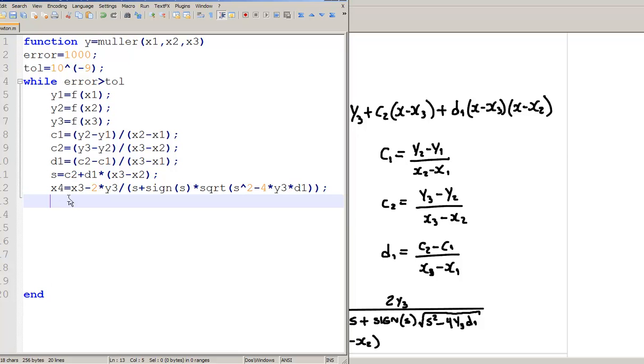Now, let's compute the error. The error is absolute value of the value of the function at x4, because x4 is the new iteration.